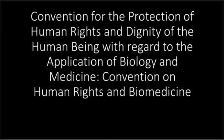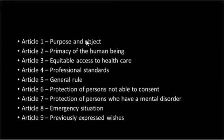Moving on to the next slide, let's discuss the articles mentioned in this convention. We have already seen in previous videos the Universal Declaration of Human Rights, the Convention for the Protection of Human Rights and Fundamental Freedoms, the International Covenant on Civil and Political Rights, and the International Covenant on Economic, Social and Cultural Rights. Keeping all these in mind, the Council of Europe adopted this convention to realize human rights and fundamental freedoms, to accelerate developments in biology and medicine, while ensuring the dignity of human beings and protecting human rights.